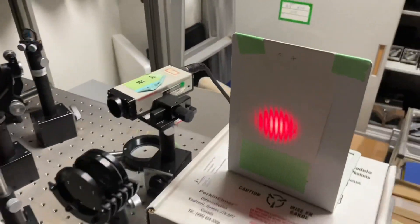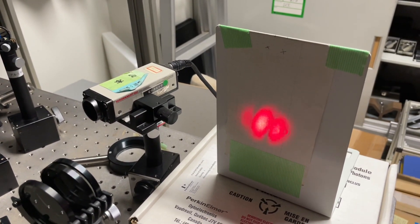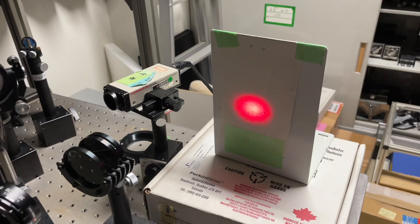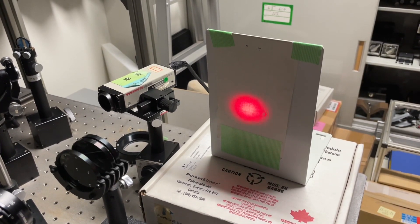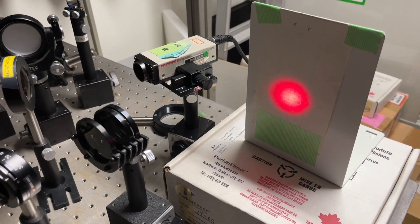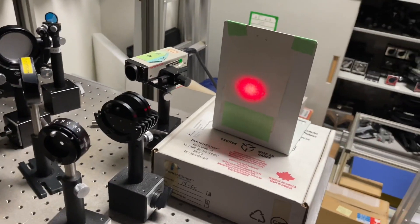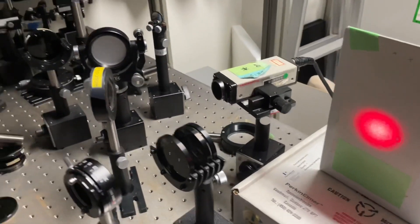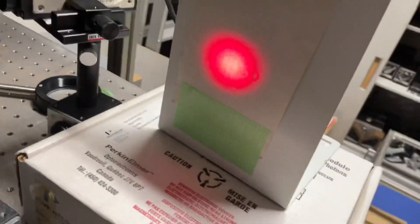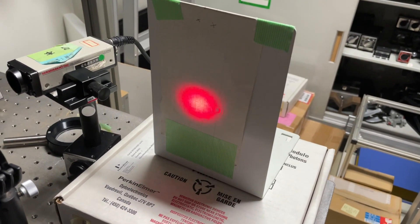And you can see if I change the beam here, then the fringes are moving. This is so sensitive that if there is movement on the table, you will get the interference pattern moving here.